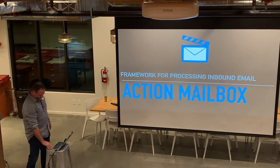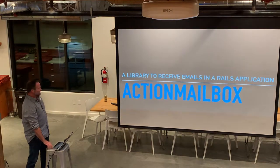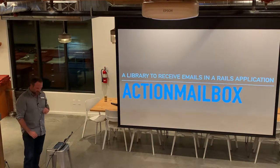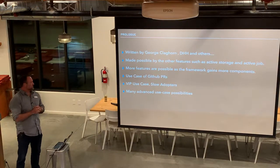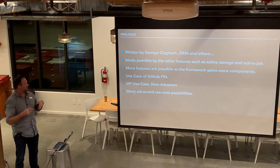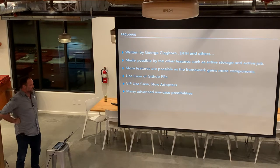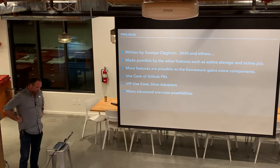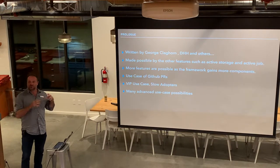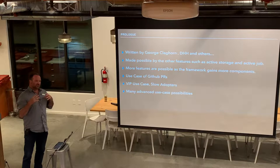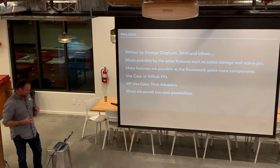They also call it a library to receive emails in a Rails app. Looking through who wrote this — it's a lot of George Claghorn from Basecamp and DHH, of course, along with many other contributors. What's great about it is how it's made possible by other features in the framework — they're using Active Storage and Active Job, and without those parts, this wouldn't really be possible.